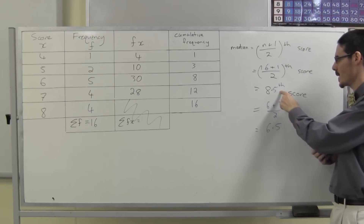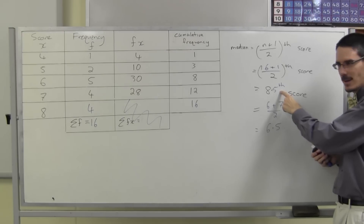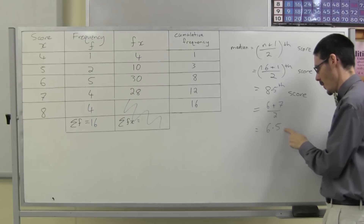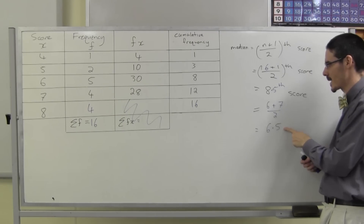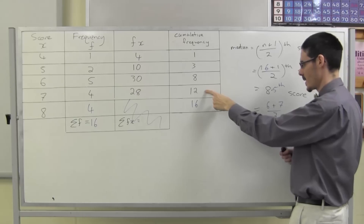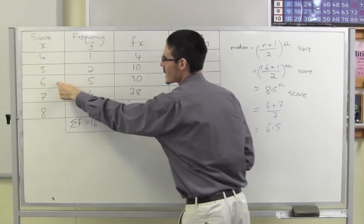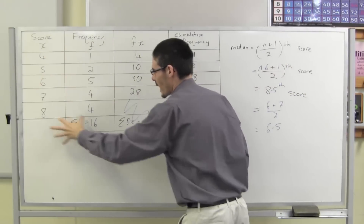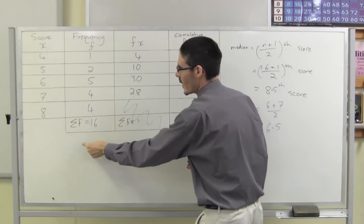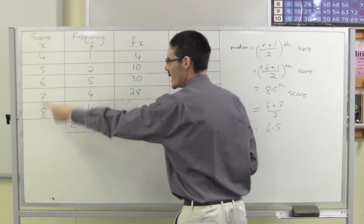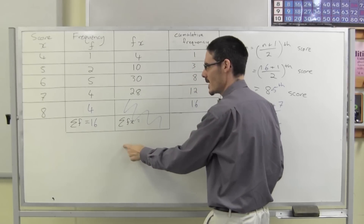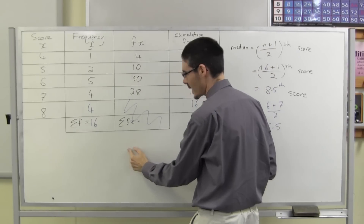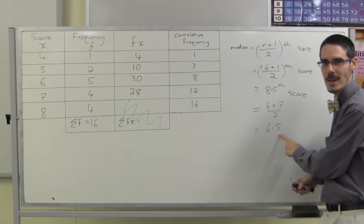Remember, the formula tells me the position of the median, and I look through the cumulative frequency column to find the actual value. In this case, 8.5 means halfway between the 8th score and the 9th score — halfway between a 6 and a 7. Remember, this is shorthand; the scores written out in order are: 6, 6, 6, 6, 6, 7, 7, 7. So the median is halfway between a 6 and a 7, making it 6.5.